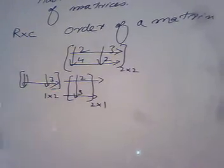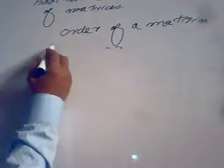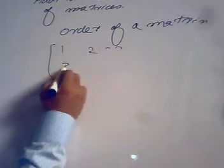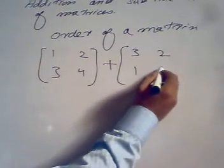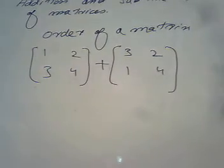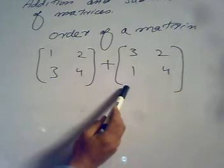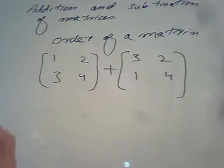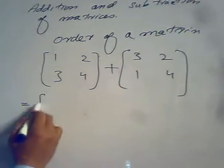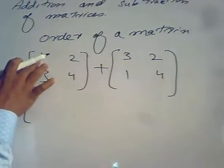Whenever we have matrices for addition and subtraction, we need to check whether they are conformable for addition — meaning can we add them or not. Suppose we have matrix [1, 2; 3, 4] and we want to add it to [3, 2; 1, 4]. The order of the first matrix is 2 cross 2 and the order of the second is also 2 cross 2. So whenever we add or subtract two matrices, their orders must be the same.